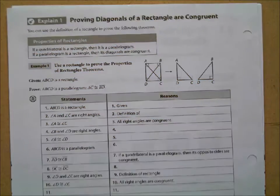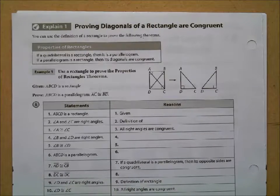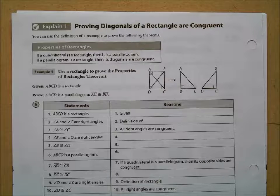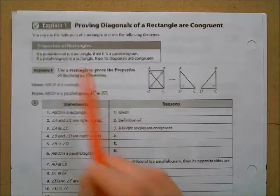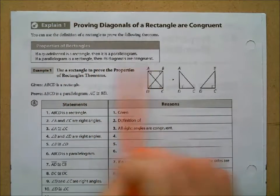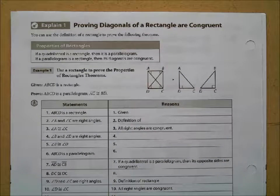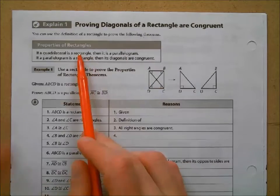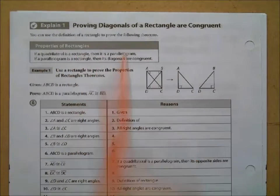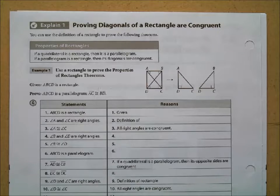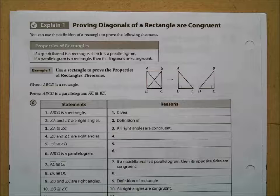Let's turn the page to 448. The conjectures that we made are properties of rectangles. If a parallelogram is a rectangle, then its diagonals are congruent. If a quadrilateral is a rectangle, then it's a parallelogram. You can think of a rectangle as a specific kind of parallelogram — a parallelogram is the more general shape, and a rectangle fits inside that.